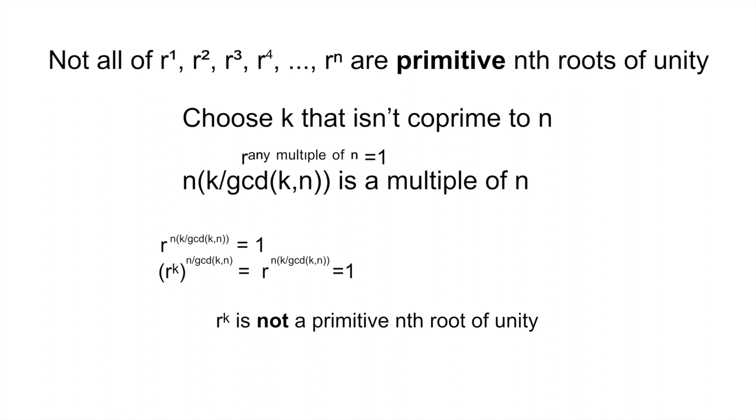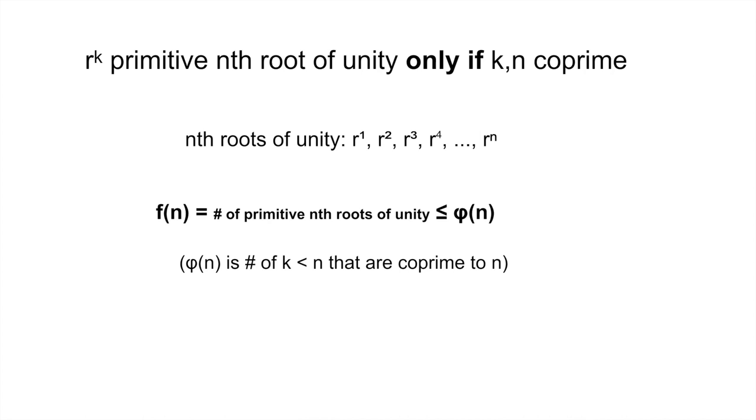We have now shown that r to the k can only be a primitive nth root of unity if k and n are coprime. So out of our list r, r squared, r cubed, dot dot dot r to the n of nth roots of unity, only terms with powers coprime to n could possibly be primitive. So, we have shown that there are at most phi of n primitive nth roots of unity, where phi of x is defined as the number of whole numbers between 1 and n that are coprime to n. That is, we have shown that f of n is less than or equal to phi of n for all n.